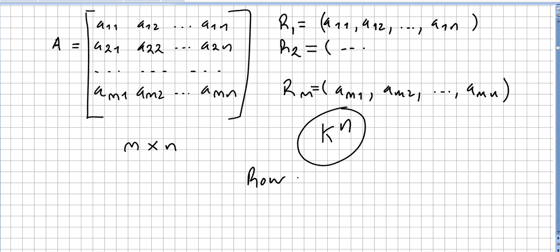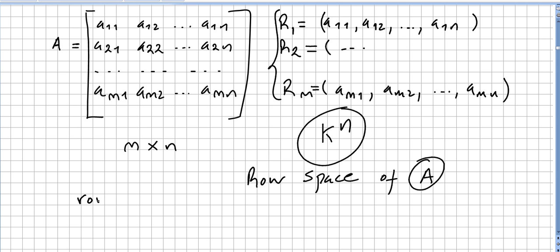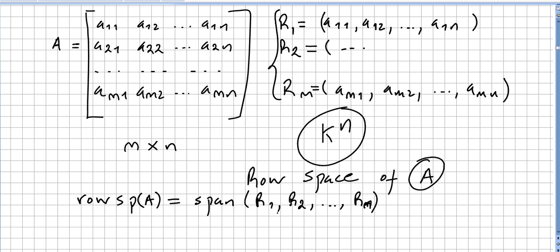We call this the row space of A. So the row space is linked with this matrix. The row space of matrix A is the subspace of K^n spanned by these row vectors, and we can write: row space of A equals the span of r1, r2, ..., rm.